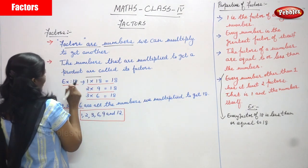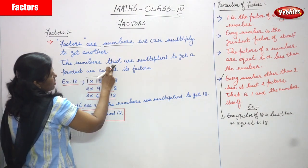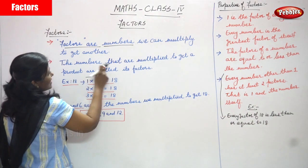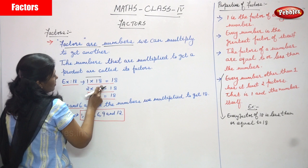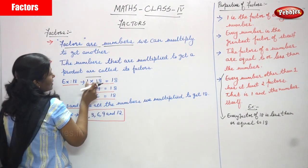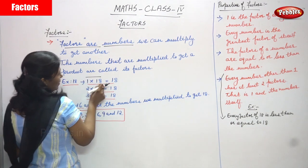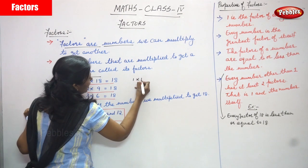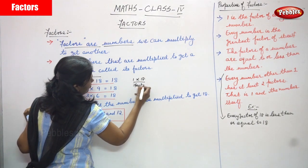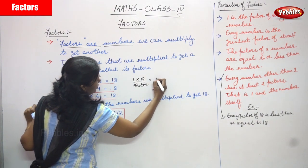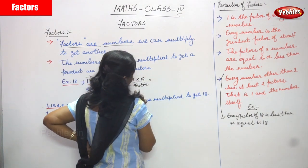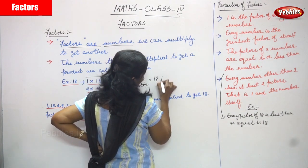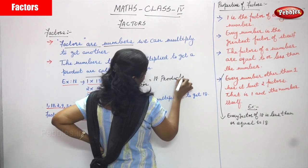The next definition: the numbers that are multiplied to get a product are called its factors. So 1 into 18 — these numbers are multiplied to get a product. The result of 1 into 18 is 18, and that result is called the product. I think now you understand.